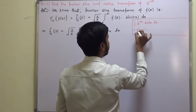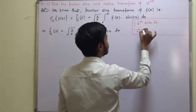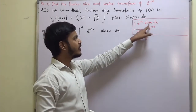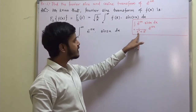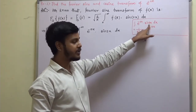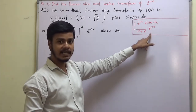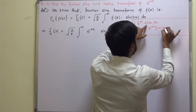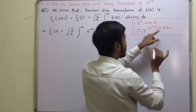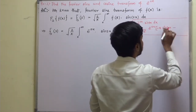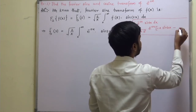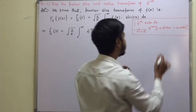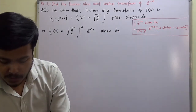This is equal to 1 upon (a squared plus b squared) into e to the power minus ax, in bracket: minus a sin(bx) minus b cos(bx). This is the formula that you have to remember in order to solve the problems.